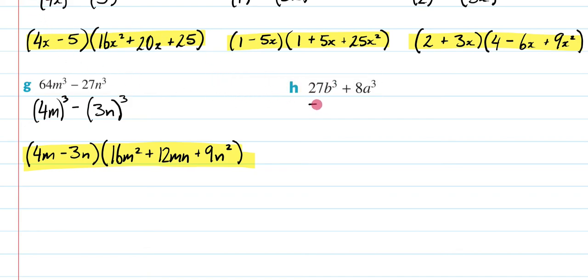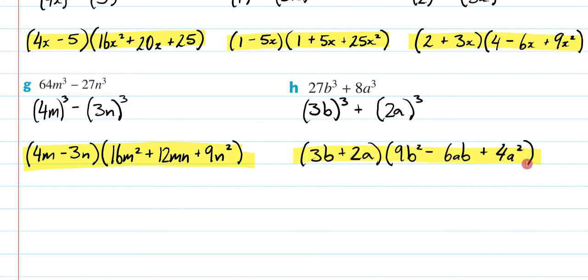This is going to be 3b cubed plus 2a cubed, which is going to wind up being, now that I've got a plus, it's going to be 3b plus 2a. This one squared, 9b squared minus this times this is going to be 6ab. Then it's going to be plus 2a squared, which is 4a squared, and we're done.